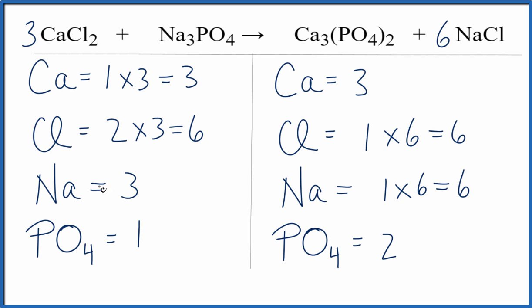So it looks like we're kind of down to the sodiums. If we put a two in front of the sodium phosphate, this Na3PO4, we'd have three times two, and that would equal six, so that would be balanced.